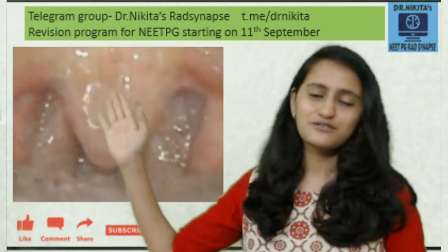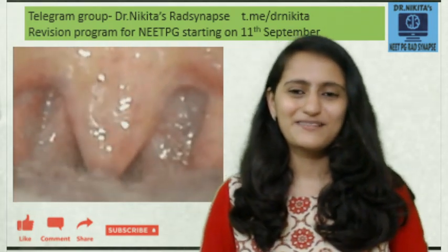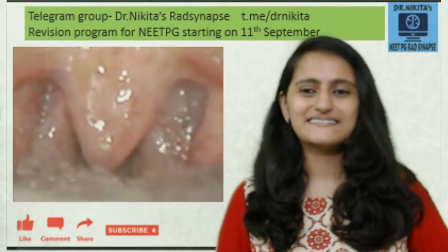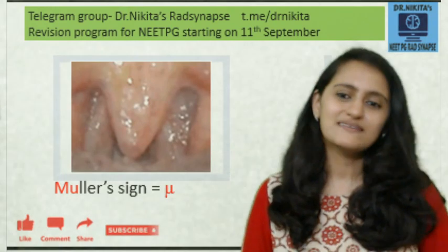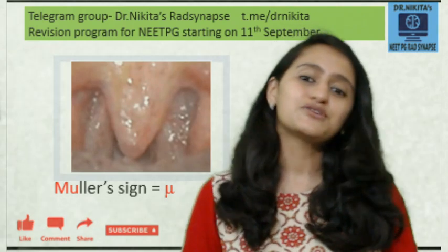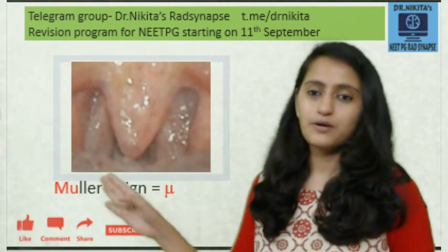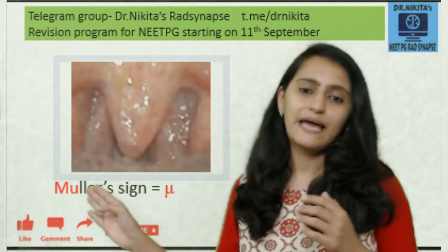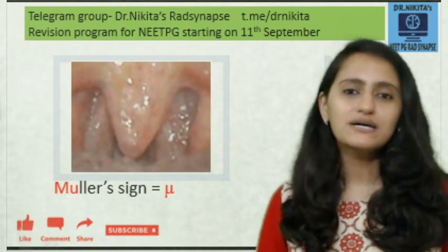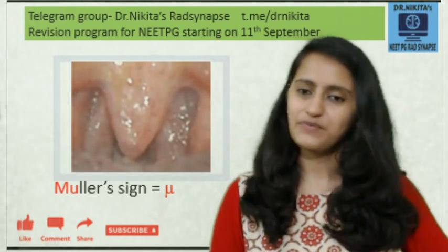This next video shows pulsation of the uvula. This is called Müller's sign. To remember it: when you say Müller's — M-U — that MU is basically U, as in uvula. So Müller's or MU is your uvula. Müller's sign is pulsations of the uvula.